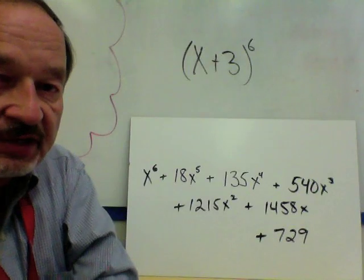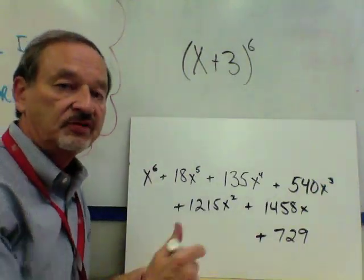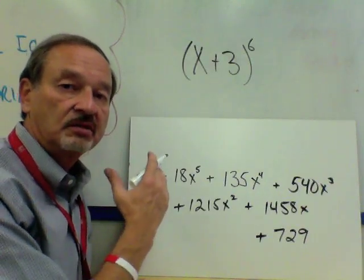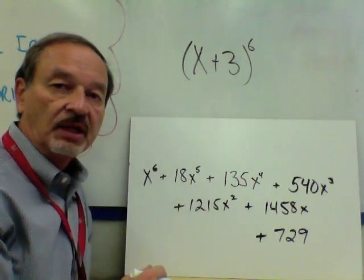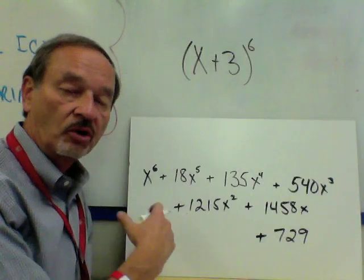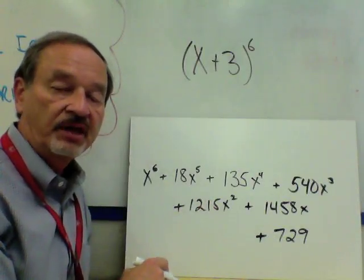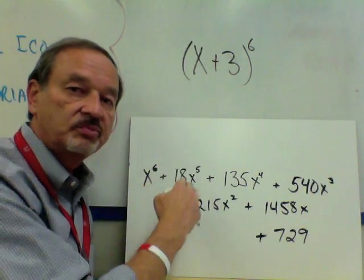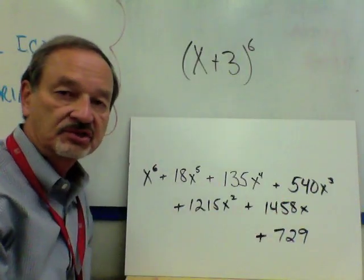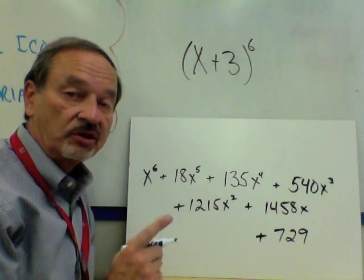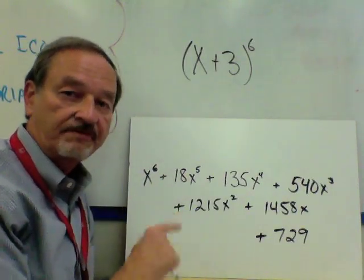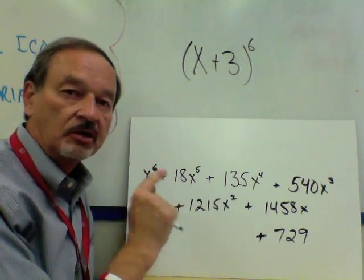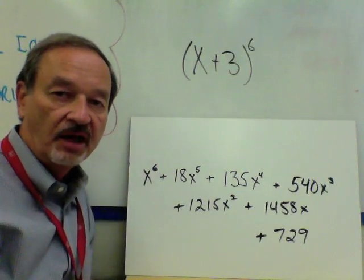So this is your final answer. If you didn't get it, go back and find where your mistake is. If you did, you've just done an example of using Pascal's Triangle to expand a binomial. It's a little bit of work, but not hard work — most calculations you can do with mental math or a calculator. It's a lot easier than writing x plus 3 six times and doing that multiplication six times. And remember, have no fear.